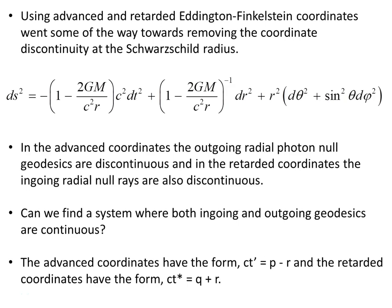Using advanced and retarded Eddington-Finkelstein coordinates went some of the way towards removing the coordinate discontinuity of the Schwarzschild radius — this value R is 2GM/c² — which meant this part of the line element became undefined. In the advanced coordinates, the outgoing radial photon null geodesics are discontinuous, and in the retarded coordinates, the ingoing radial null rays are also discontinuous. So can we find a system where both ingoing and outgoing geodesics are continuous?